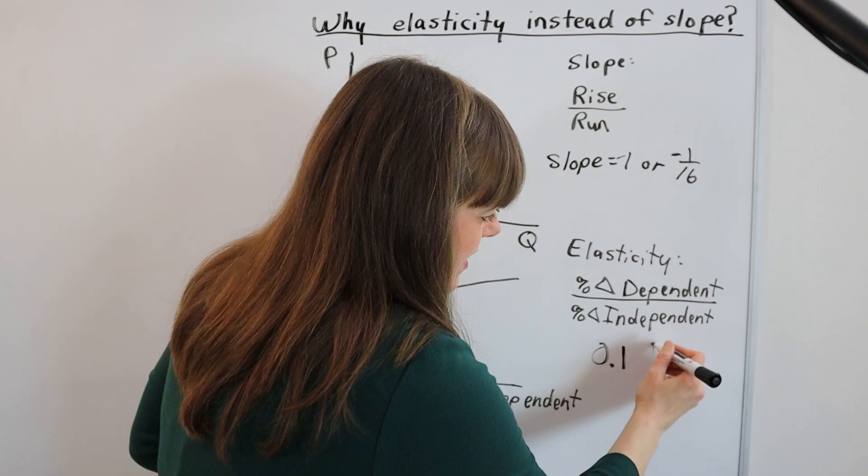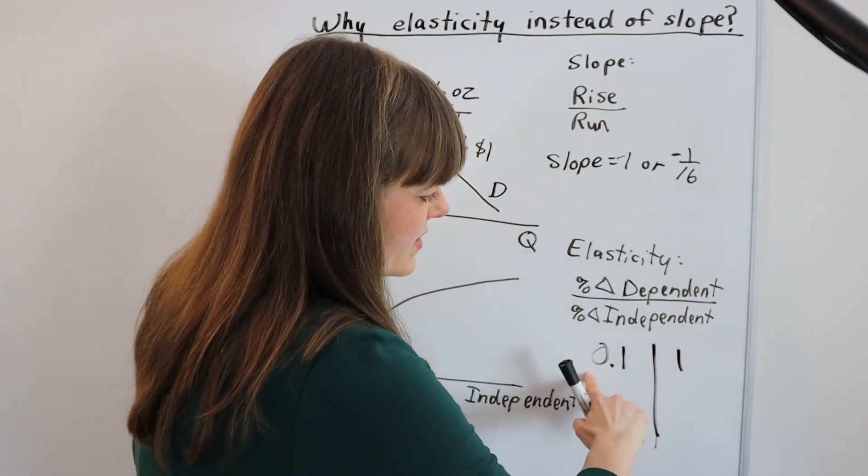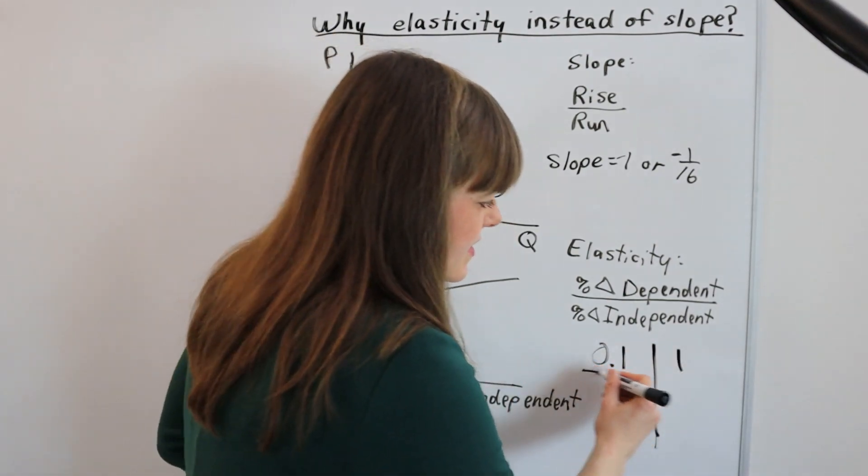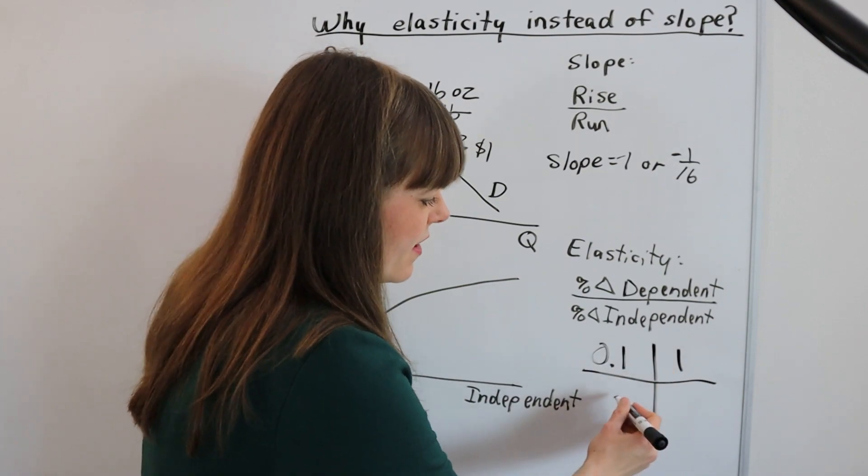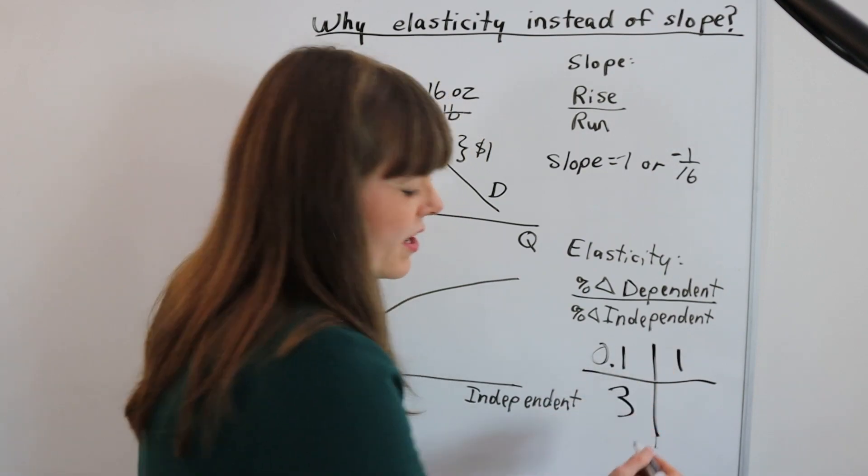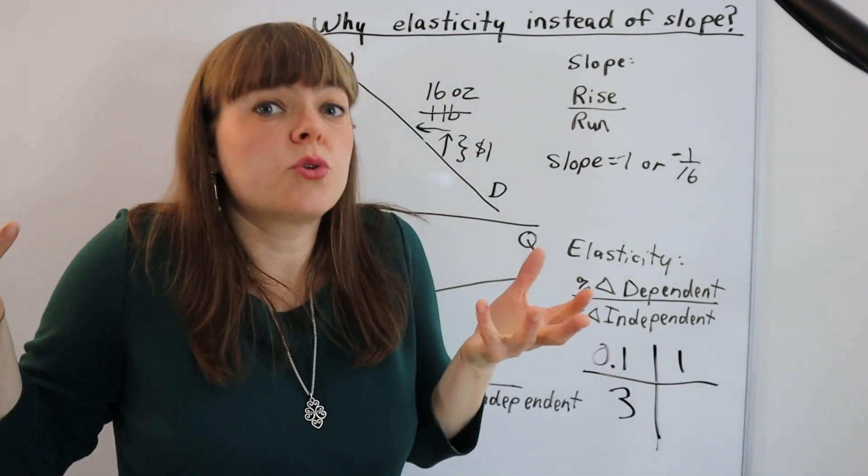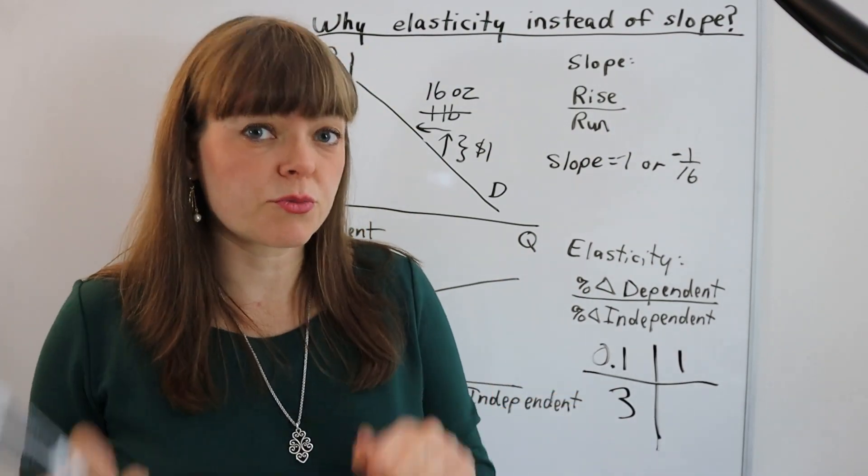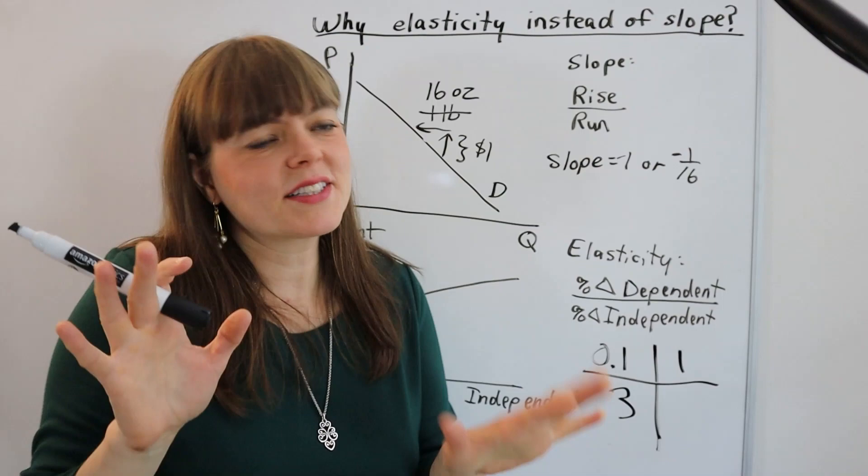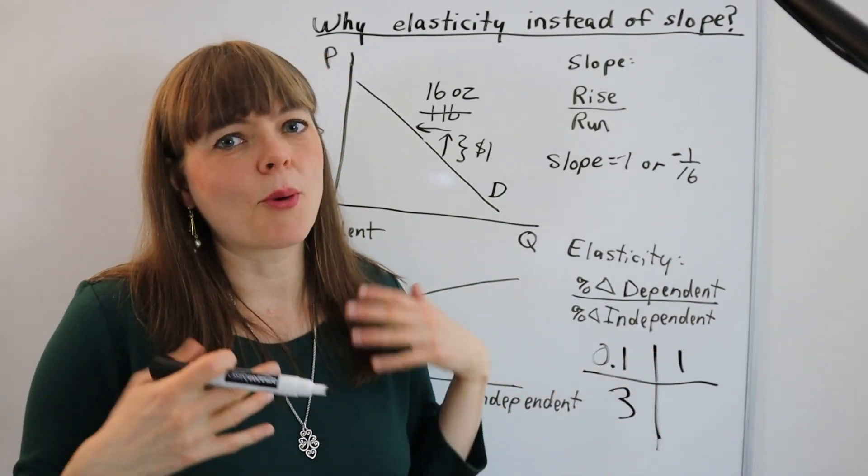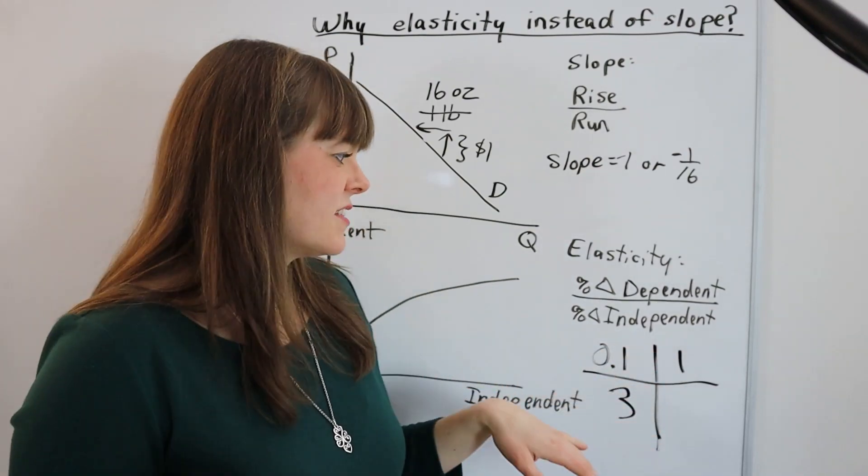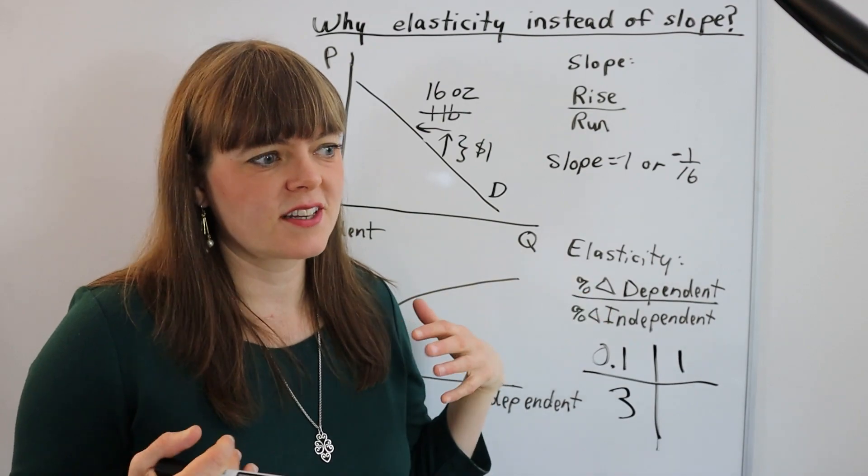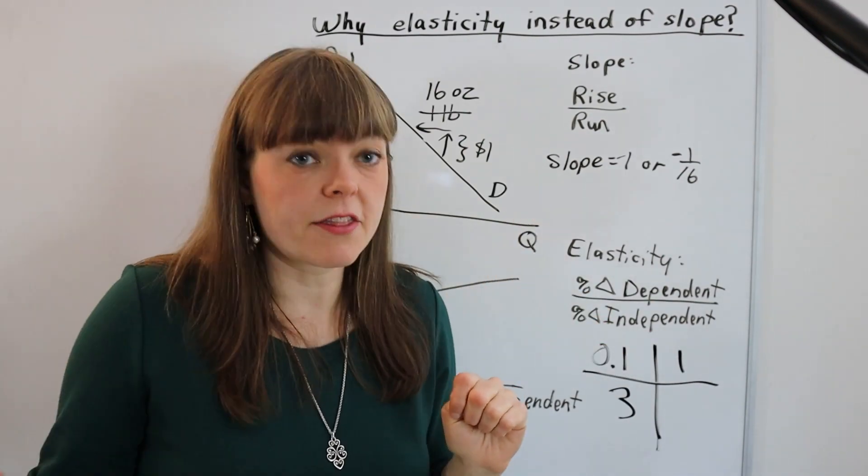So economists can kind of get an intuitive sense of what is a 0.1 elasticity, what's an elasticity of one, what's an elasticity of three, which of those is a huge behavioral response, which is a fairly small behavioral response. Now, obviously you have to put it into context of how meaningful the change is, like the dependent variable: just quantity of cheese purchased versus deaths.